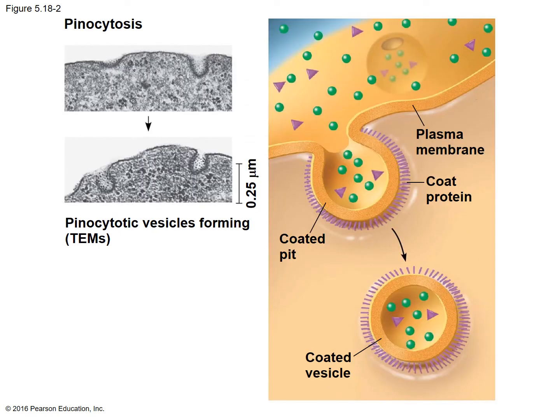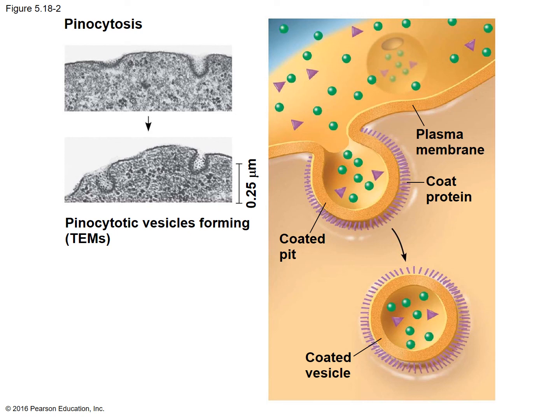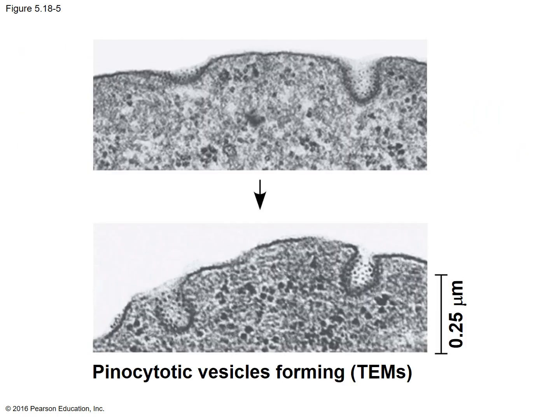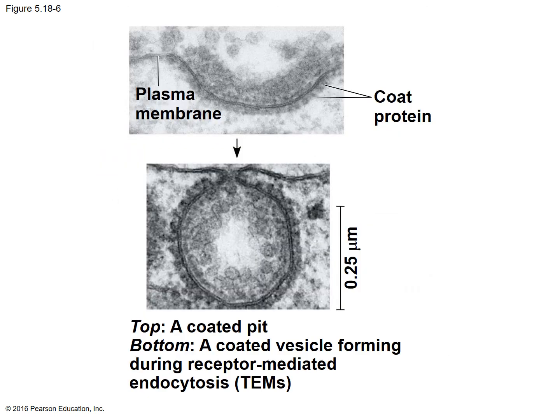Figure 5.18-2 is looking at pinocytosis. You can see it again with the transmission electron microscope; the vesicle that is forming is much smaller. And then we have a receptor-mediated endocytosis situation occurring — you have receptors present on the cell membrane, binding occurs, then invagination happens and in with it comes some of the solute. That's every one of them blown up bigger, and we are out.